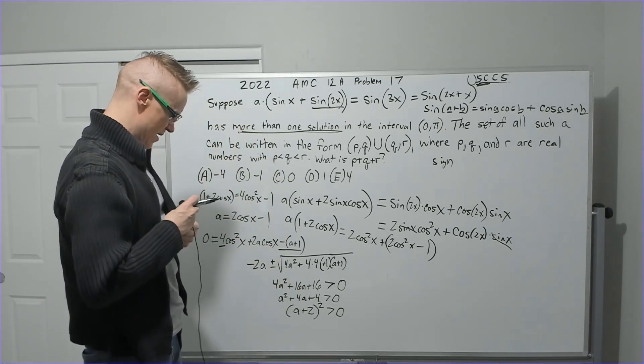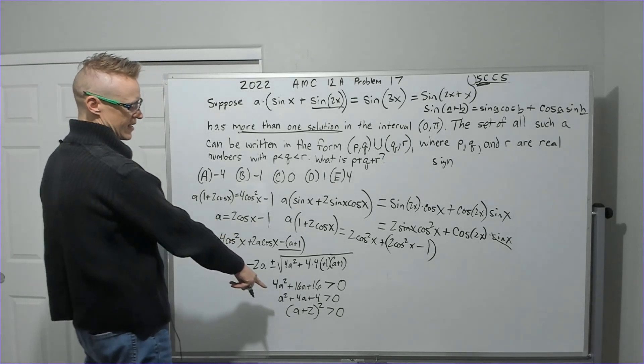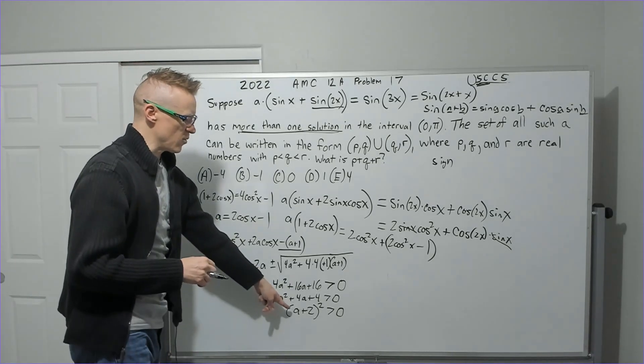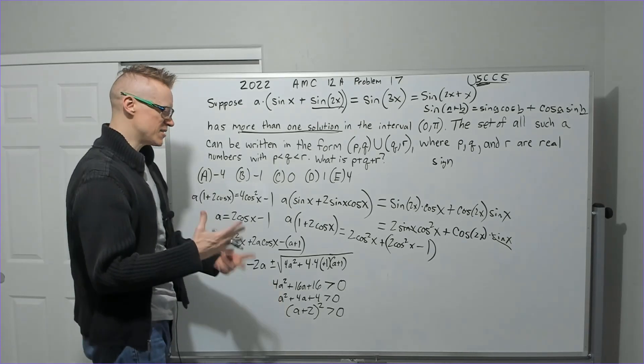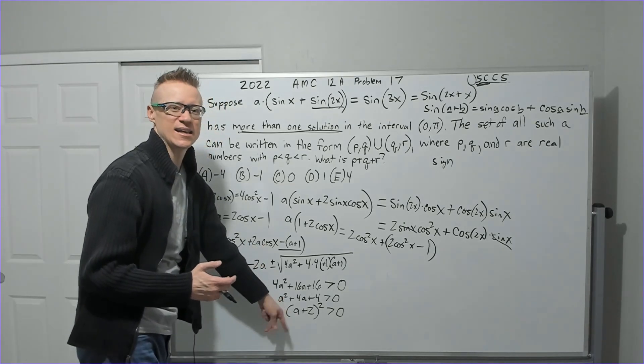Got it. Understand enough. Not a lot of board space here. I guess there's a lot of work this problem takes. So this is a parabola essentially, and we need it to be greater than 0. It's greater than 0 everywhere except when a is negative 2.